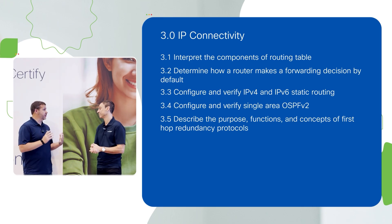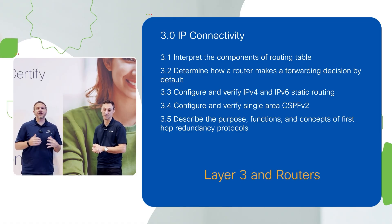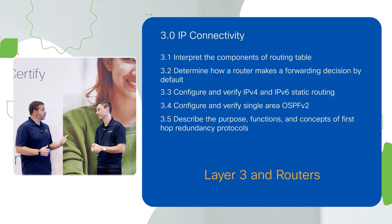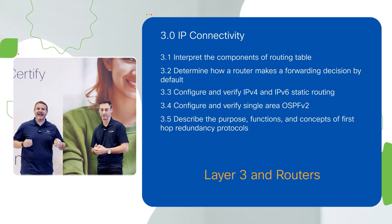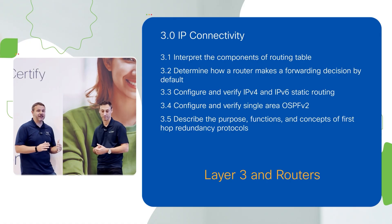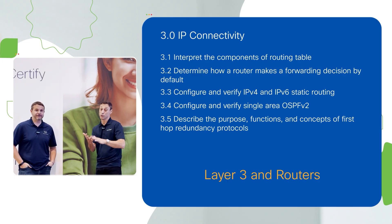IP connectivity is all about Layer 3 — the ability to route — and this is where routers come in. In our Domain 2 video we talked about switches getting access to the network; now we're going to focus on IP connectivity, which is all about routing. There are two types to look at: static routing and dynamic routing.